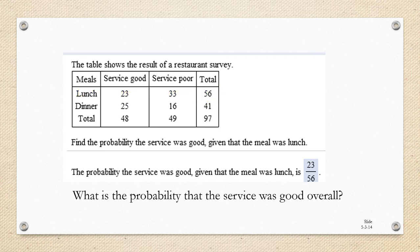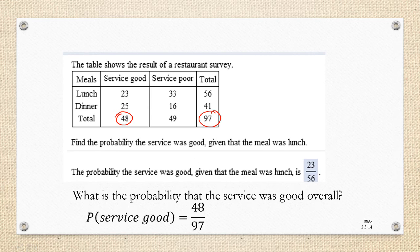To determine what the probability of service being good overall would be, we have to look at the total number of people who said that the service was good, which is 48 out of the total who completed the survey, regardless of whether they were eating lunch or dinner. So that's going to be 48 divided by 97, which is the probability of good service overall, approximately 0.49.